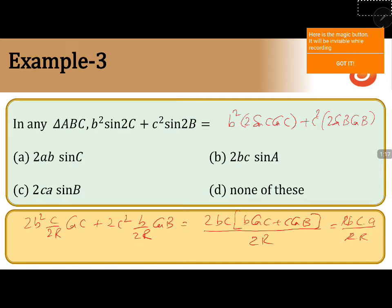All the 3 answers will satisfy. Let me take 2r sin a into bc by r. So, this r gets cancelled. You get 2bc sin a.